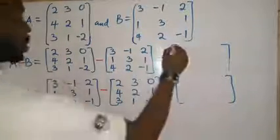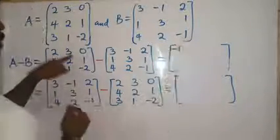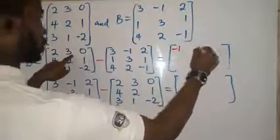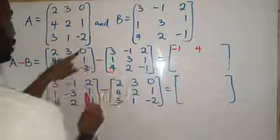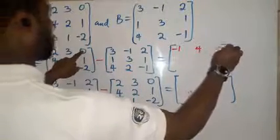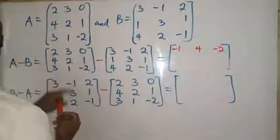Let's see that. 2 minus 3, gives us minus 1. 3 minus minus 1, gives us 4. You have to be careful with those signs. 0 minus 2, gives us minus 2.